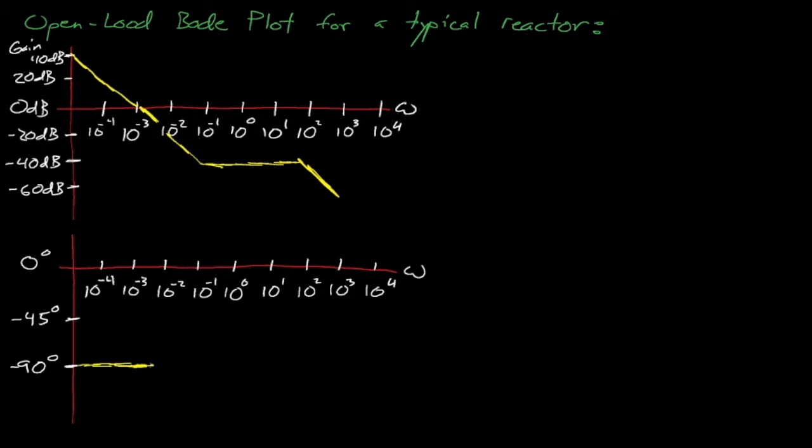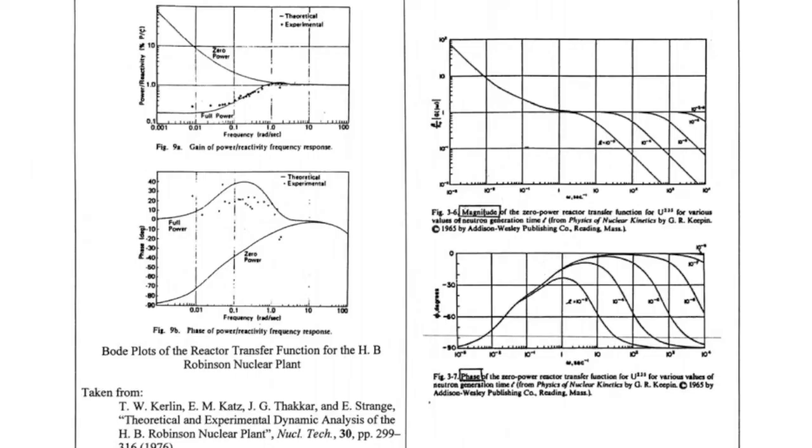The phase of our reactor transfer function begins at negative 90 degrees for low frequencies, climbs up to 0 degrees, and then returns to negative 90 degrees for high frequencies. These gain and phase plots are approximate, and they will certainly change for different reactors as the constants of these equations change, which is something that we can see here for these example plots, where we see the gain and phase Bode plots for different reactors with slightly different parameters.